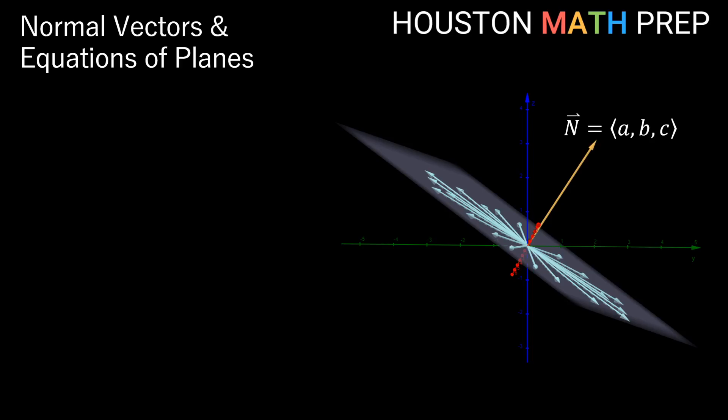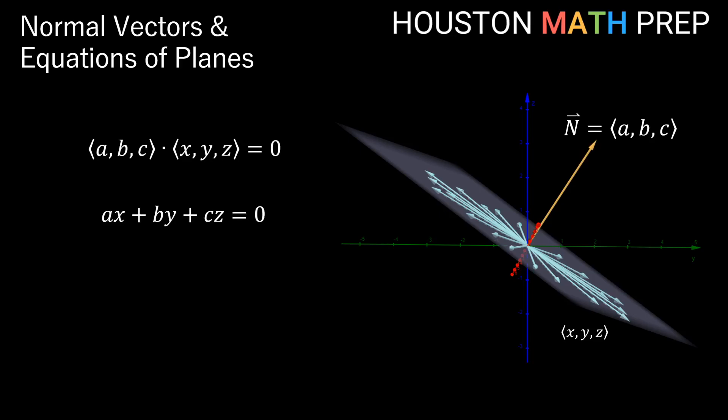We've got our normal vector n, and if you look in the plane that n is normal to, there are going to be an infinite number of vectors that lie in that plane — lots and lots of vectors, all orthogonal to the normal vector. Let's call all of them x, y, z. Since they're orthogonal to the normal vector n, any of those vectors in the plane will have a dot product with n that equals 0. If we write out what that dot product calculation looks like, we get an actual equation for this plane with normal vector a, b, c. The components of our normal vector actually appear as the coefficients for our variables in the equation of the plane.